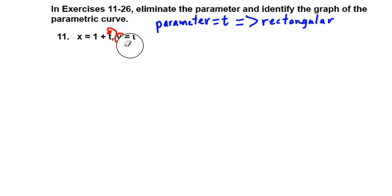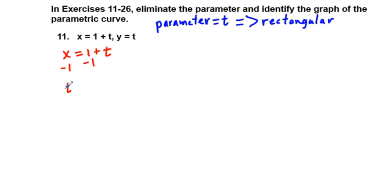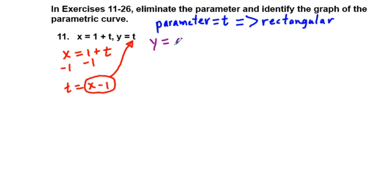Or, even a better way to do it would be to take this equation x equals 1 plus t and solve for t. How do we solve for t? Subtract 1 from both sides of this parametric equation. Now we can replace this t in the y equation with x minus 1 and rewrite this equation as y equals x minus 1. This is going to be our rectangular equation.